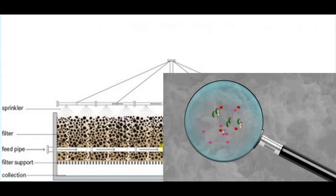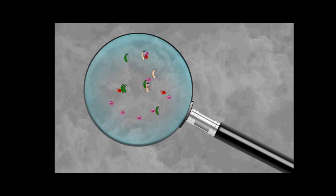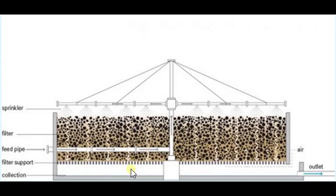The slime layer contains bacteria which help in reducing the waste in the wastewater. Support is provided by the media acting as the filter, and the treated water is collected as it percolates down and flows out. This is how a trickling filter works.